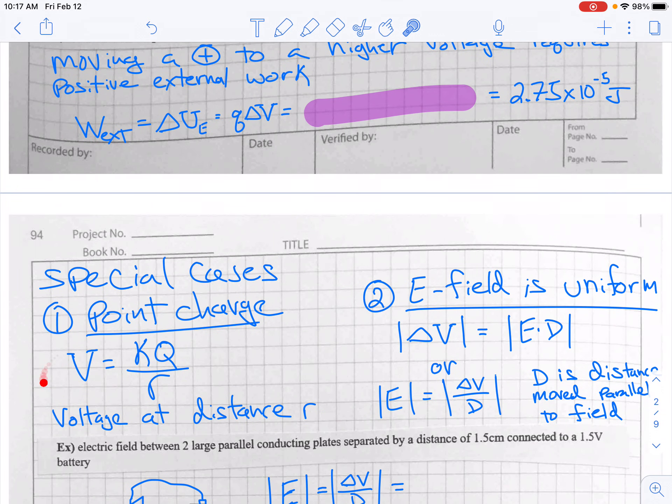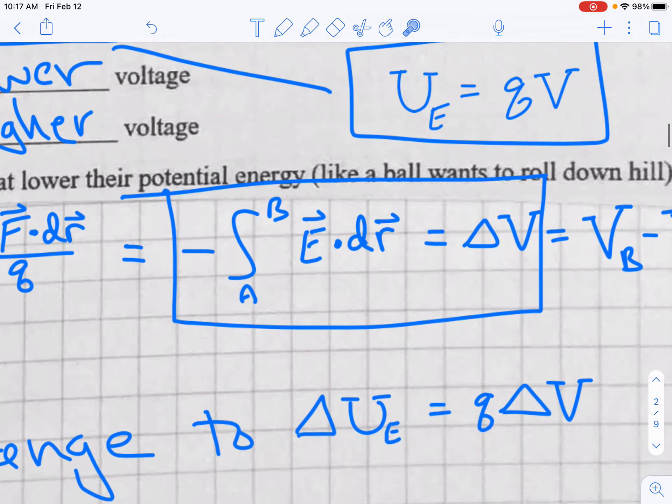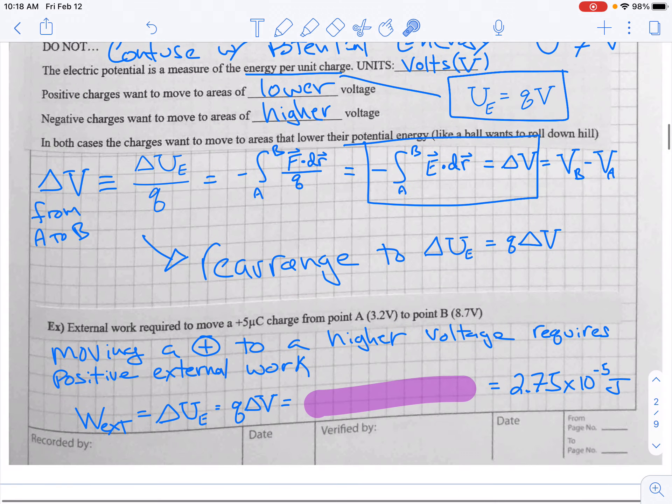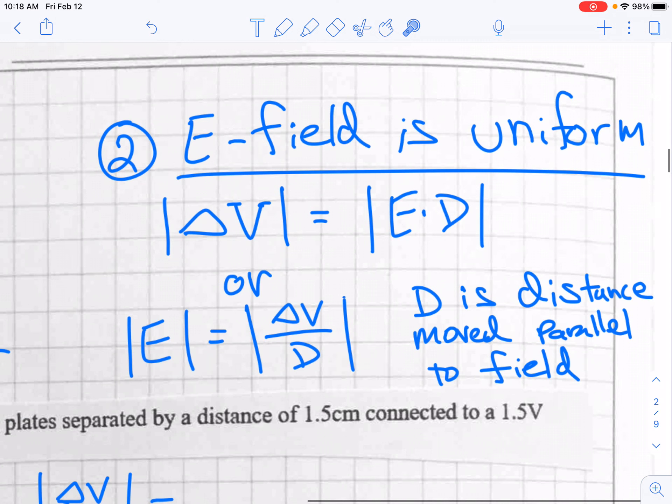So KQ over R, that would tell you the voltage from a charge Q at some distance R. Voltage at distance R. Another special case is when the electric field is uniform. If the electric field is uniform, then this can get factored out, essentially. And the integral of dr, then, if the electric field is constant, the integral of dr is just the distance that you have moved. So when you have a uniform electric field, the change in voltage is the magnitude of the electric field times the distance that you moved. Or you could say that the electric field is voltage divided by distance.